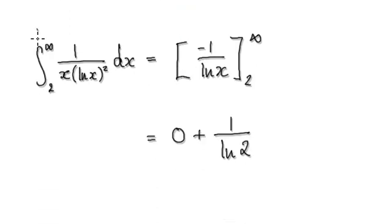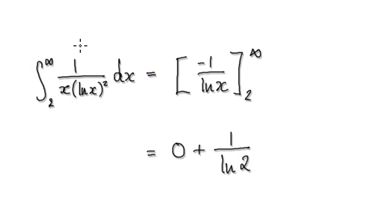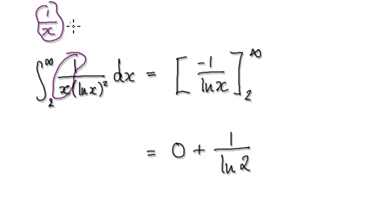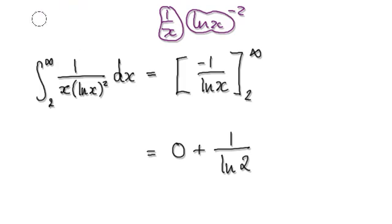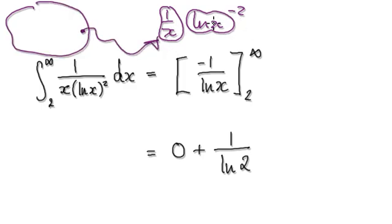So let's integrate it. You could use substitution, but learn to do it by glancing. Visualize this as being 1 over x — that's one bubble — and then 1 over natural log of x squared, which is natural log to the power of minus 2. Always try and keep an eye on one thing being the exact derivative of another. This bubble — 1 over x — is the exact derivative of this bubble — natural log of x.